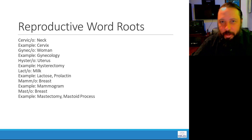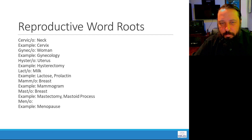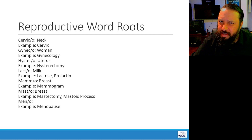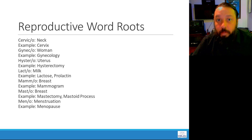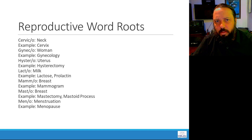Moving on to meno — like menopause. Menopause is when the body stops menstruating altogether. Meno means menstruation. In menopause, menstruation ceases completely — not just occurring less frequently, but stopping entirely.